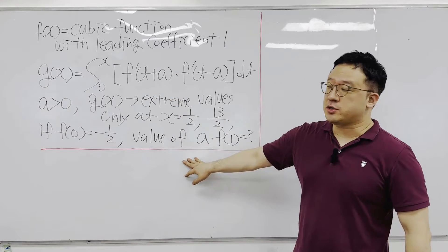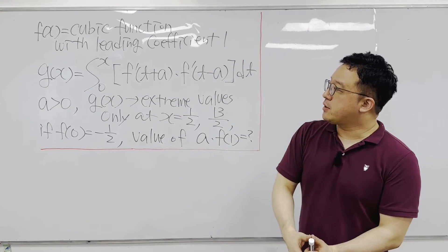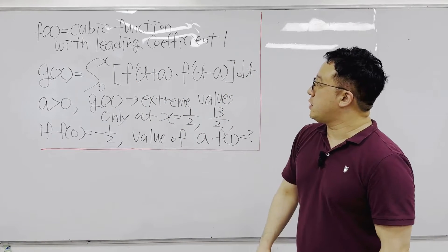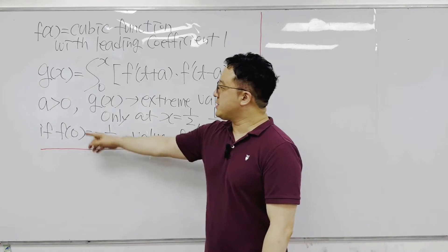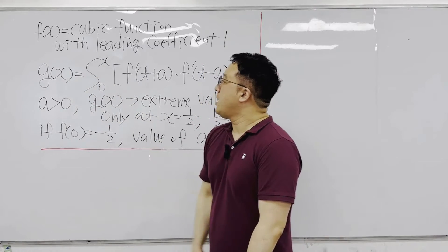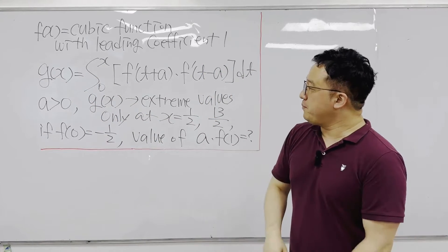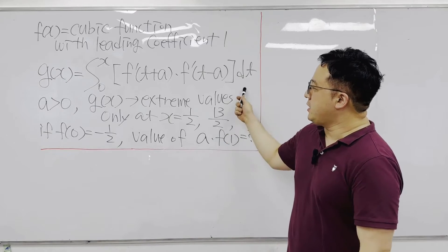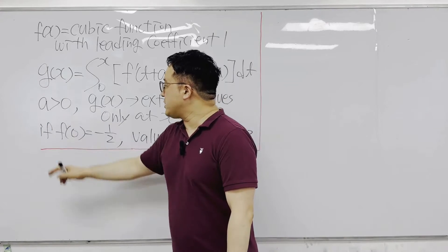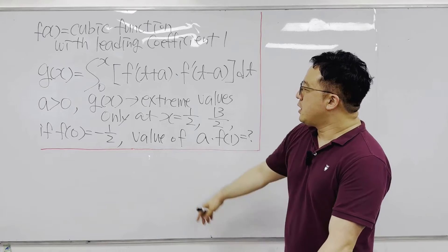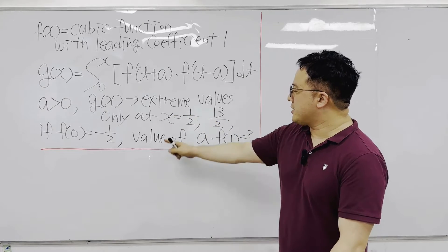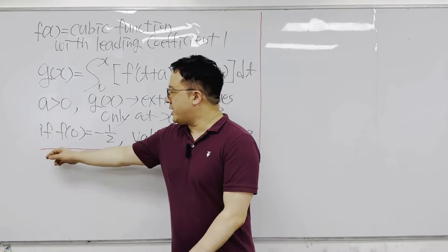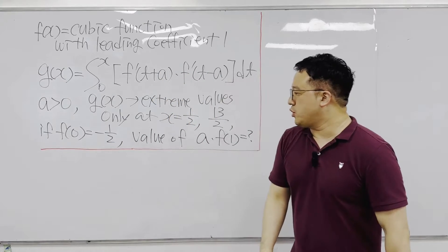Based on the description of the question, this is the summary for the conditions. We have f(x), a cubic function with a leading coefficient of 1. Then we have g(x), that is the integral from 0 to x of f'(t+a) times f'(t-a) dt. A has to be some positive number, and g(x) will have extreme values only at x = 1/2 and x = 13/2. Another condition is f(0) = -1/2.